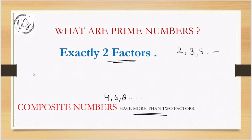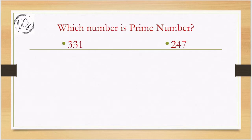Now the main question is how to check whether a number is prime or not. So here the method is trial division method. You can see two examples: 331 and 247.